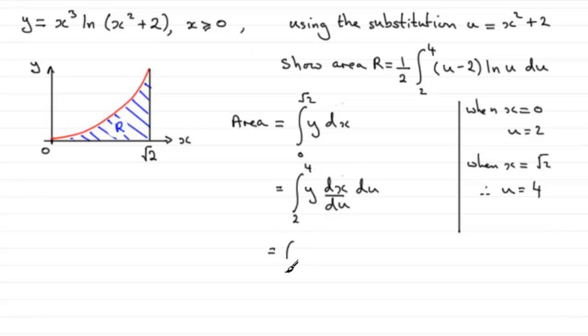Now, we've got our integral then going from 2 to 4. We've got Y. Y is equal to X cubed, natural log of what is effectively u. u is X squared plus 2, so I'm going to fill that in as the natural log of u. So that is essentially Y in terms of X and u.